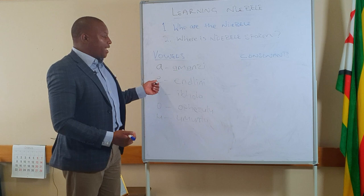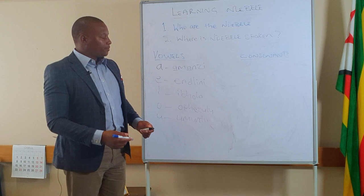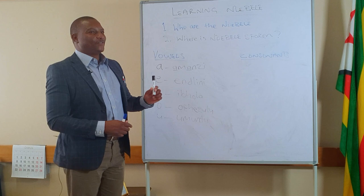Amanzi means water. E — Endini, meaning inside the house. I — Ipola. O — Opezulu, meaning the one above. U — Umuntu, meaning a person. So these are the meanings of the words that we learned in the first lesson.